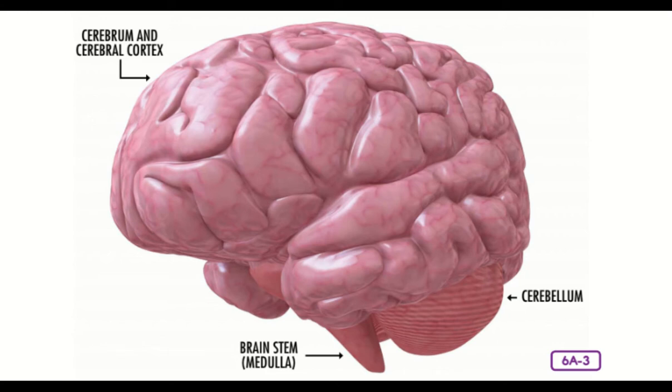Part of the cerebrum that does most of the thinking is called the cerebral cortex. Your cortex is the deeply wrinkled outer surface of the cerebrum. The more that it is used, the thicker it becomes. In other words, people who use their brains to think a lot develop thicker cortexes. Do you think your cortex is getting any thicker? It is. You are learning a lot each day.